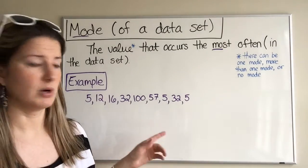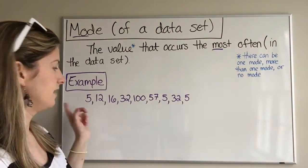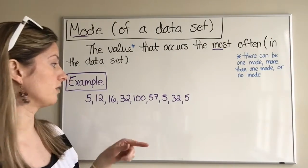Now, you may right away recognize that the mode is 5 because I see 5 three times. I do see 32 twice, but not a third time. And every other value only occurs once.